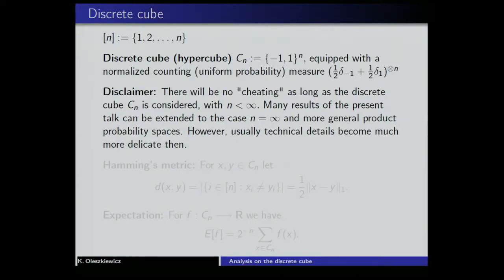Quite many things I will discuss can be extended, at least when n is finite, to more general product probability spaces. Quite often things may be extended to the cube or more general product probability spaces, even to infinite products and sometimes uncountable products. But I will not go in this direction. The basic reason is that I want to give a very simple, elementary presentation just to make those not very familiar with these notions more acquainted with them. Most of these things can be extended in various directions.